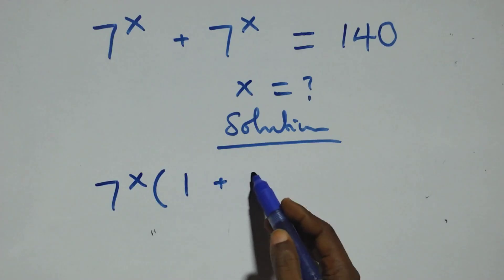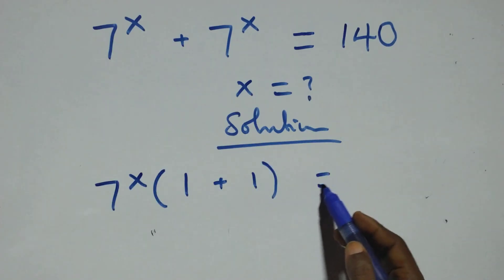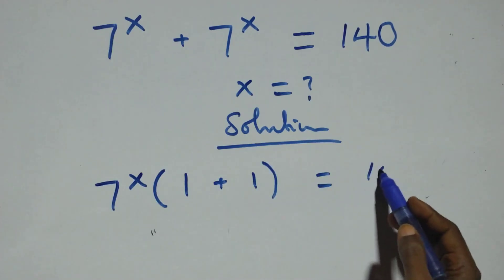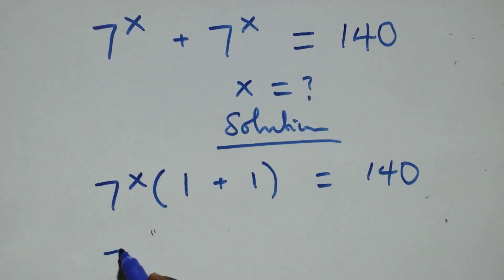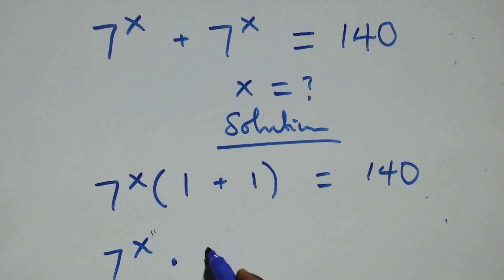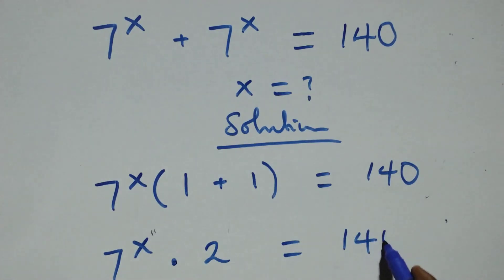Here we have 1 plus 1 equals 2, all times 7 raised to power x, equals 140 on this side. This is the same thing as 7 raised to power x times 1 plus 1, that's 2, equals 140.